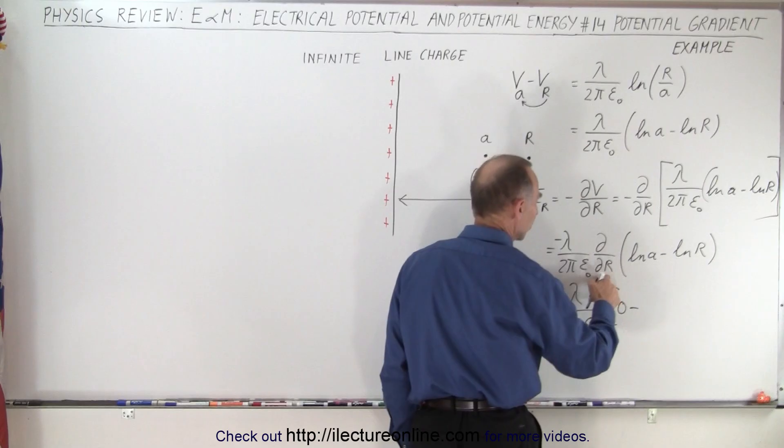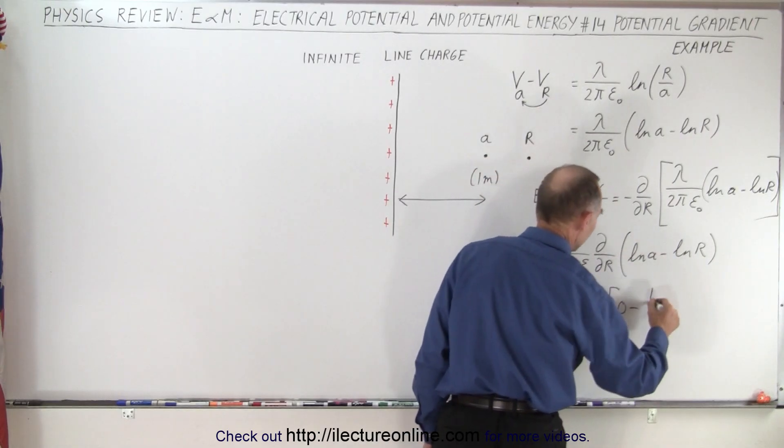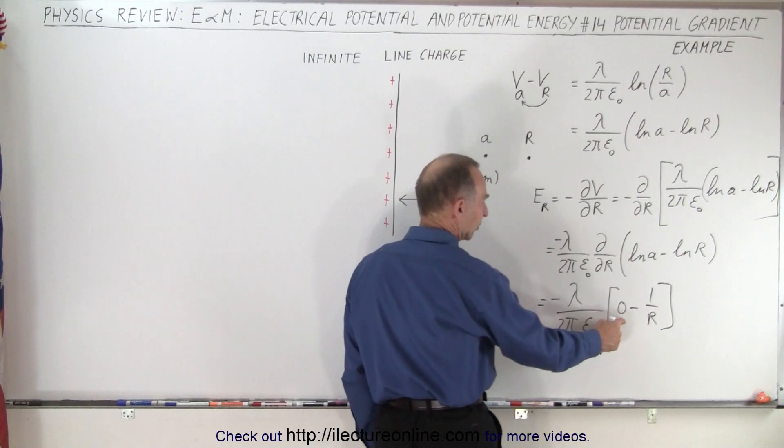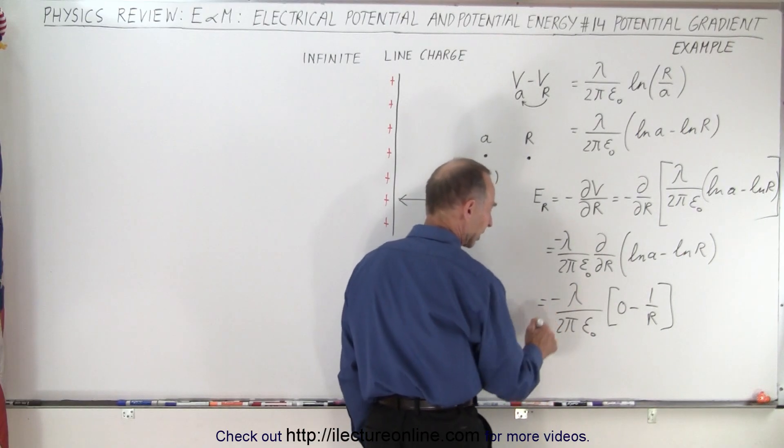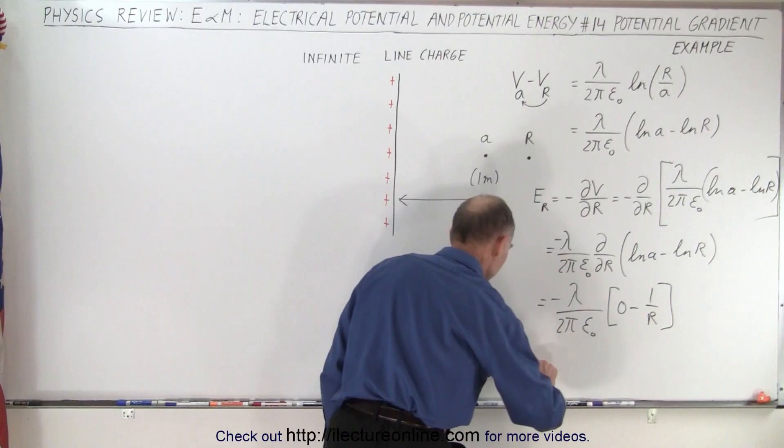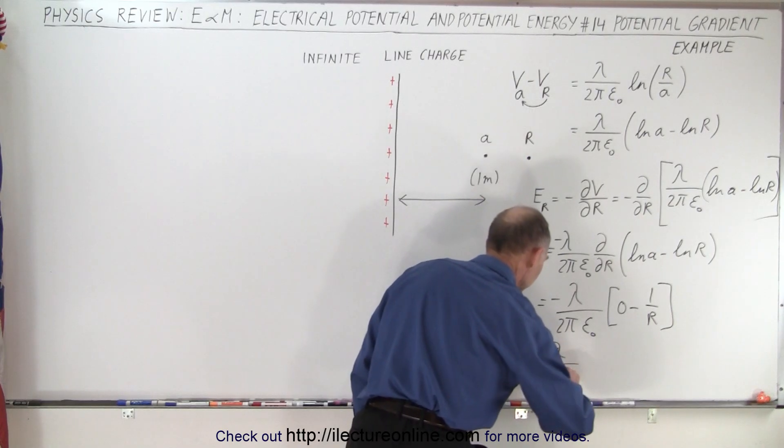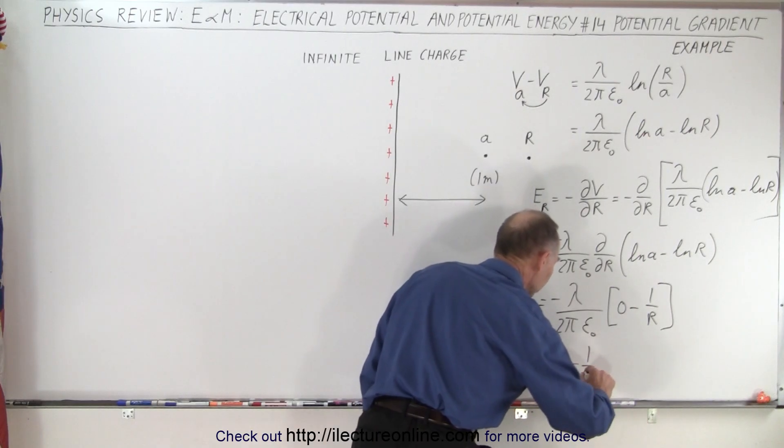Now notice that's a 0, this negative will cancel out this negative, so now we end up with E in the R direction is equal to the positive λ over 2πε₀ times 1 over R.